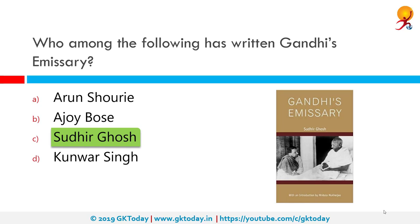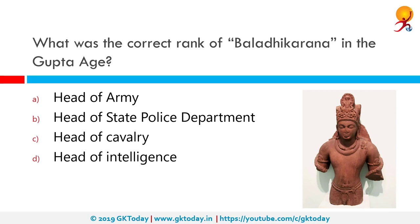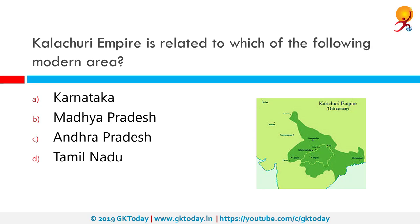What was the correct rank of Baladhikaran in the Gupta age? Baladhikaran was the head of the army in the Gupta age. In contrast to the Mauryan Empire, the Guptas introduced several military innovations to Indian warfare via their contact with steppe nomads and Hellenians. Chief among these was the use of heavy cavalry archers and heavy sword cavalry. The heavy cavalry formed the core of the Gupta army and were supported by traditional Indian army elements of elephants and light infantry.